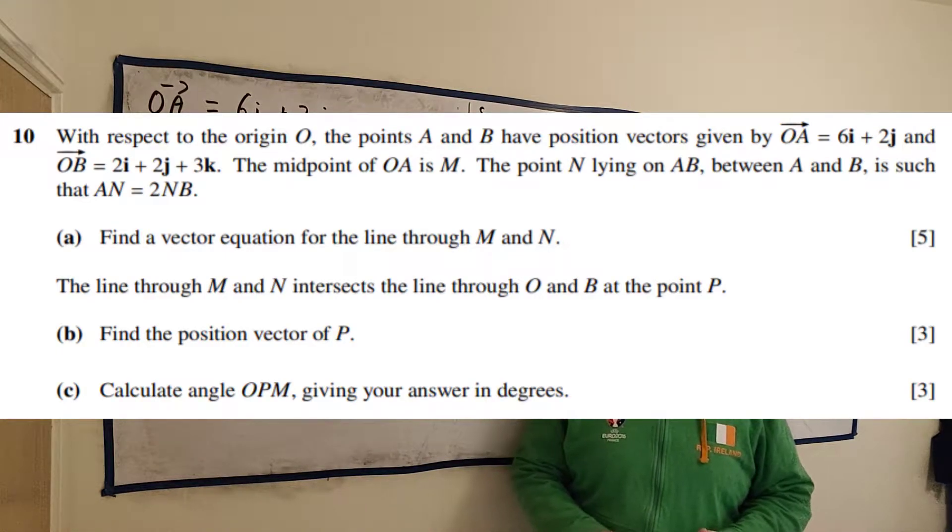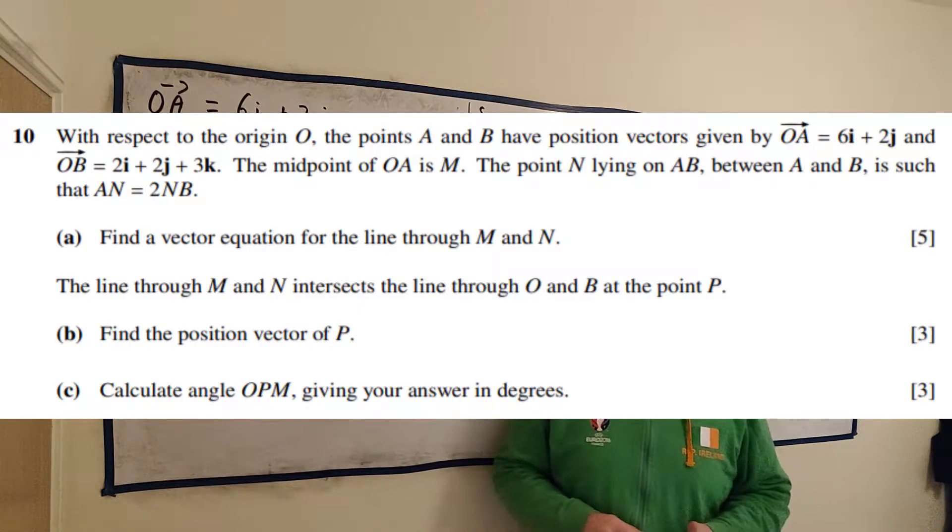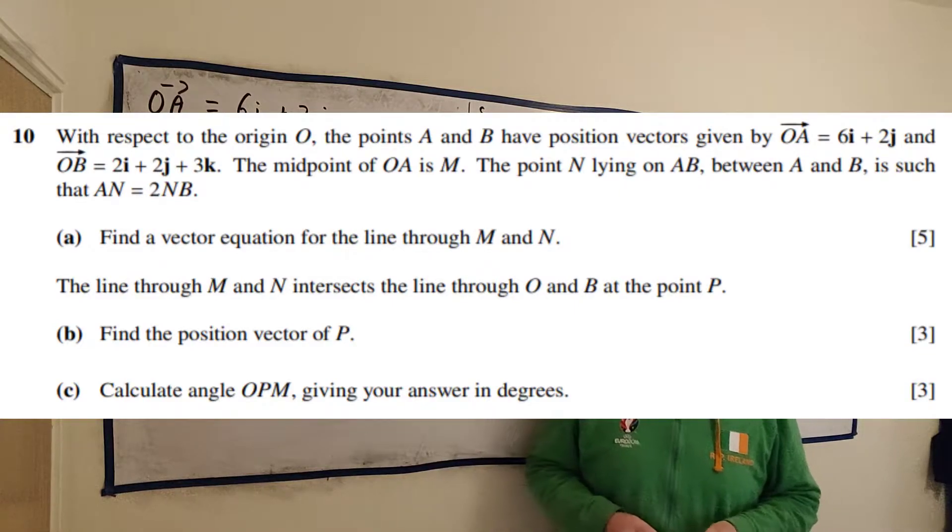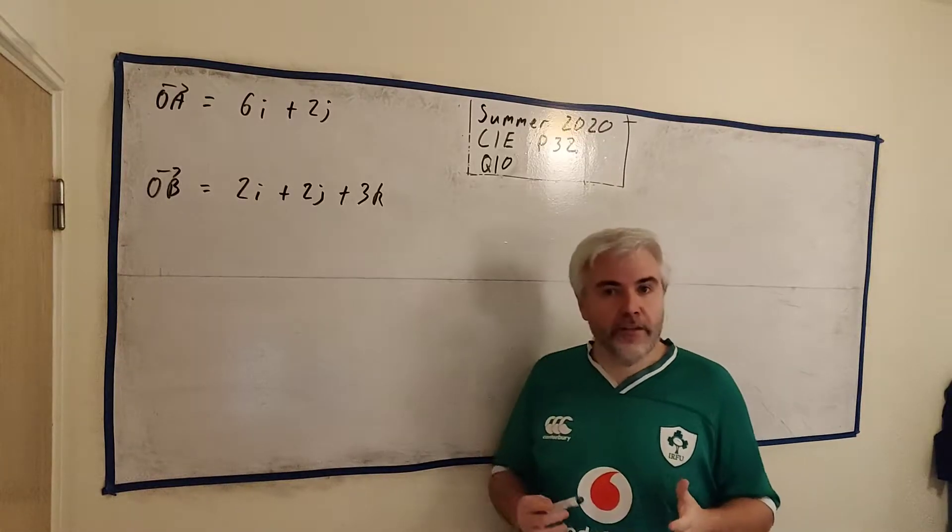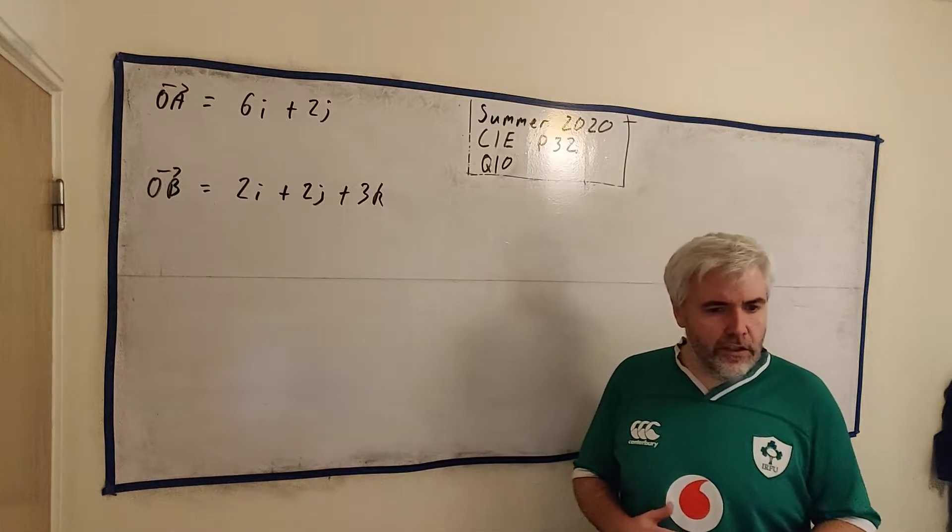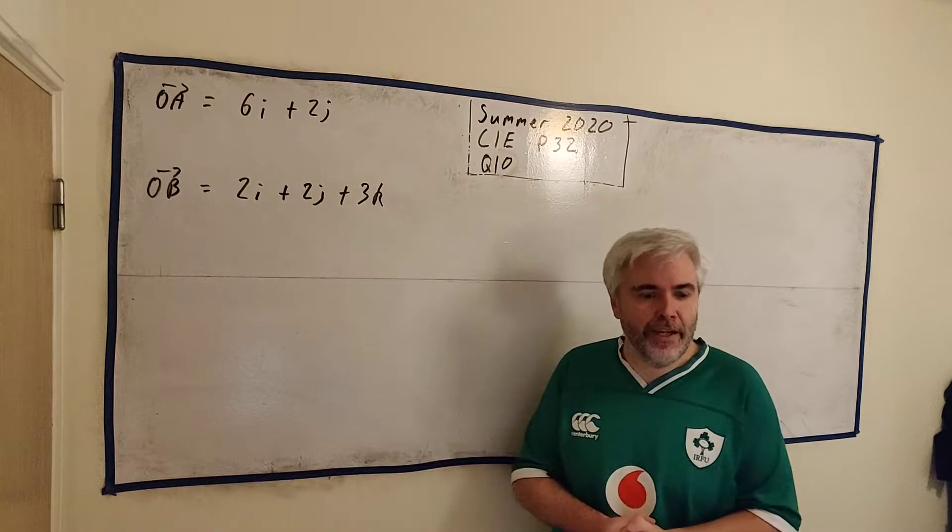This is question 10 from paper 3-2 from the 2020 Summer Exams from Cambridge International. Up the top right of the screen you'll find a card that'll bring you to my playlist that has all my solutions for the questions in this paper. And beneath the video you'll find a link to an image of this question so you can try it before looking at my solution. In this question we're going to have to use vectors to find points and angles and find vector equations of lines. Basically we're going to be manipulating vectors a lot.